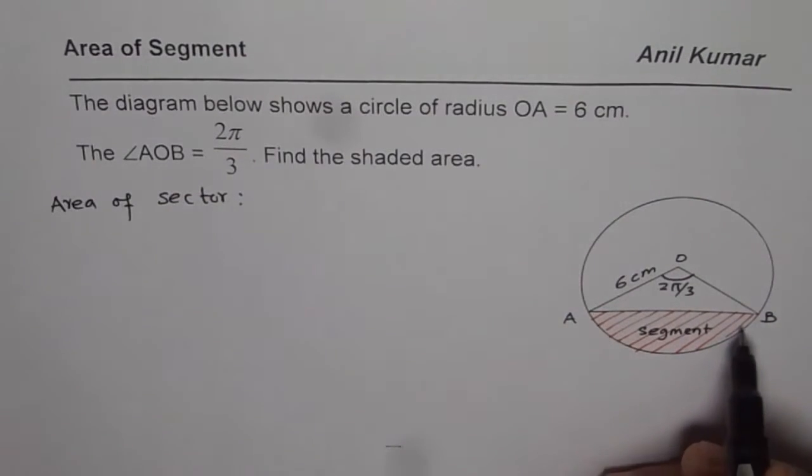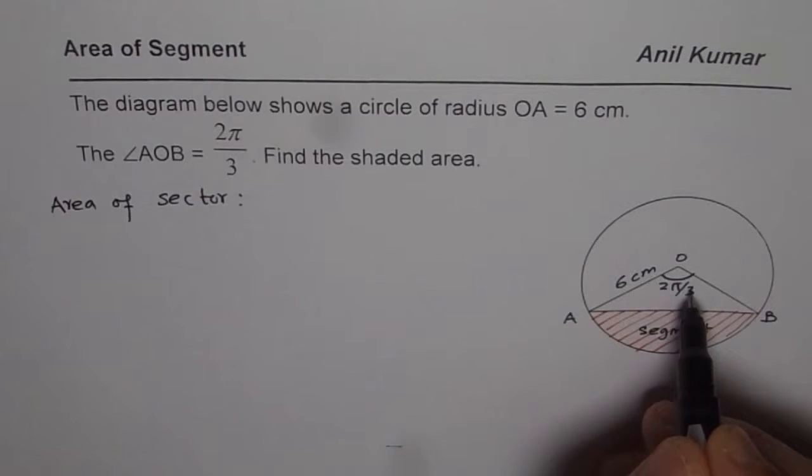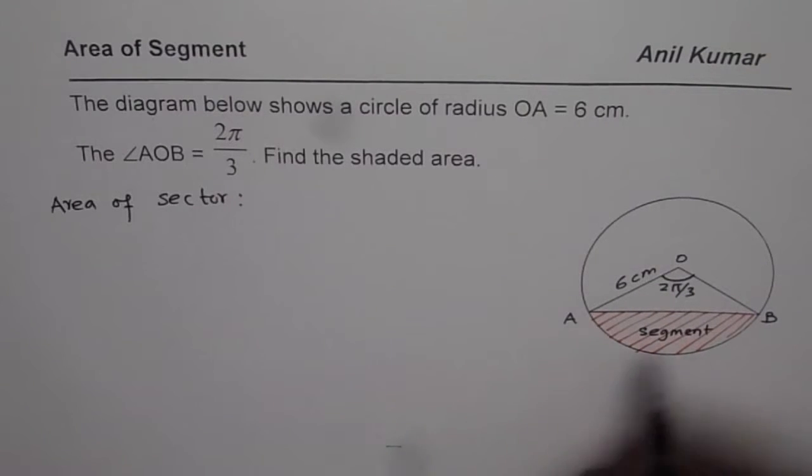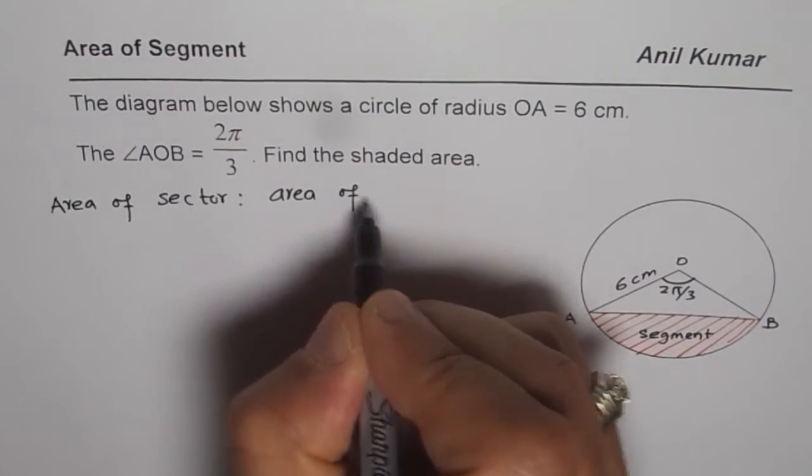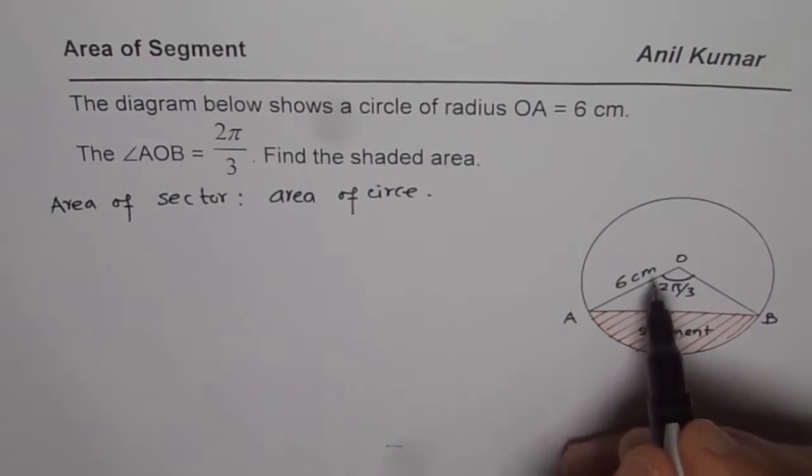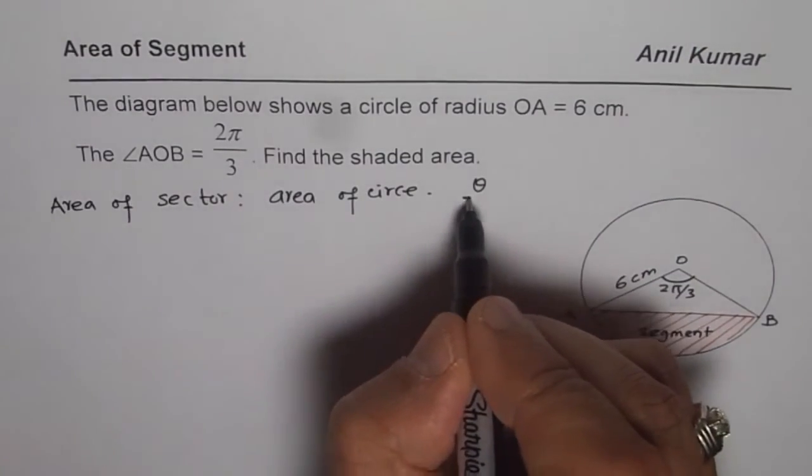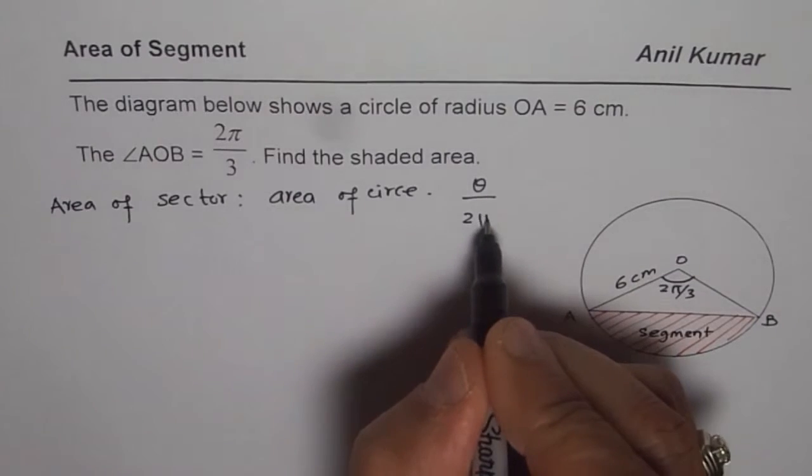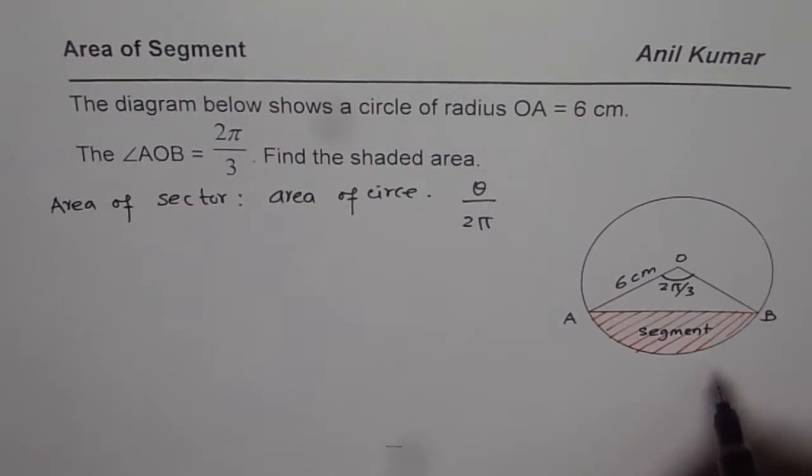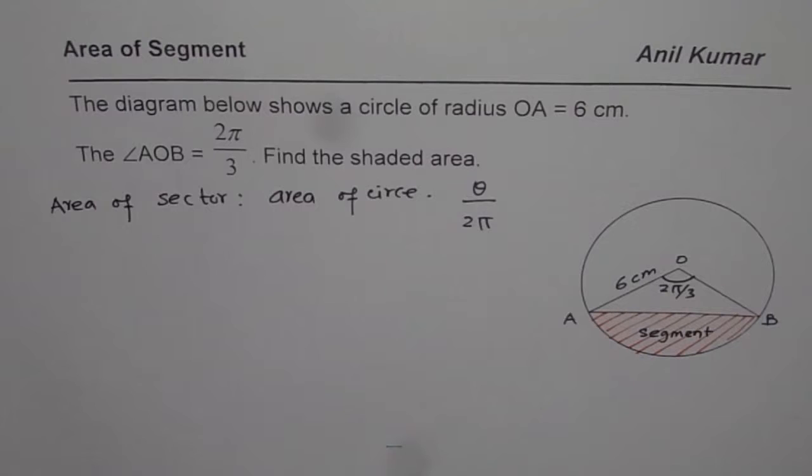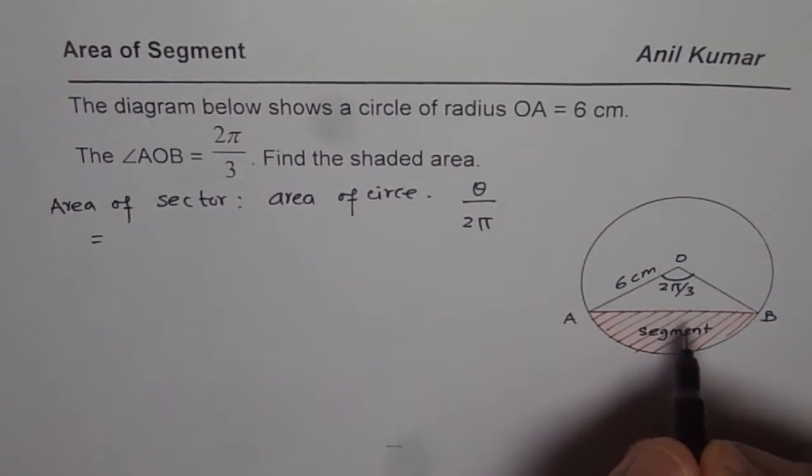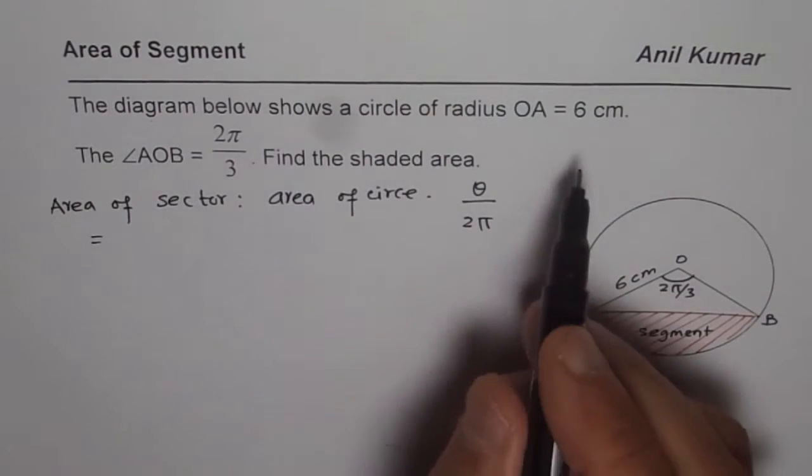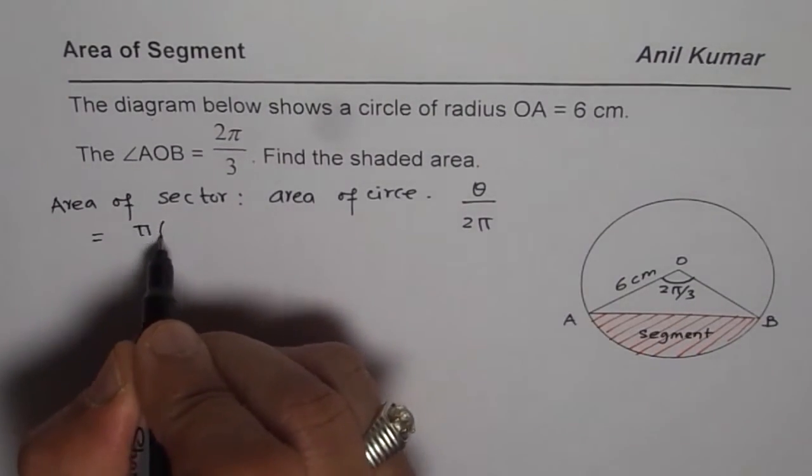Now area of the sector is area of the circle times 2π by 3 divided by 2π. So area of the sector is area of the circle times whatever angle is given to us divided by the total angle which is 2π. Since we are working in radians we will take 2π as the angle. So now we can find area of the sector, radius is 6 is π 6 square.